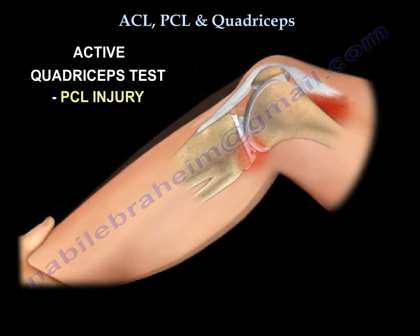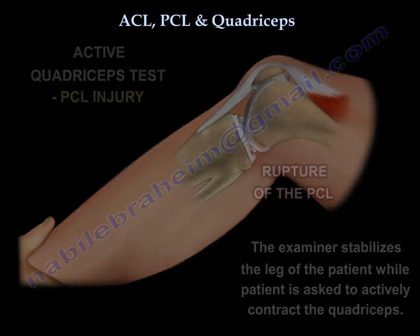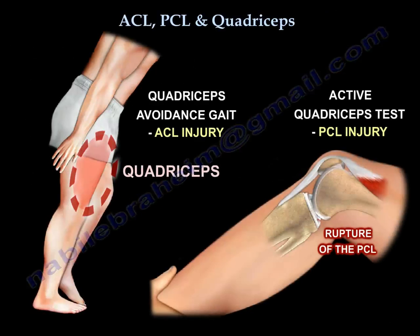The active quadriceps test occurs in PCL injury. The ACL does not like the quadriceps, whereas the PCL likes the quadriceps but does not like the hamstring.